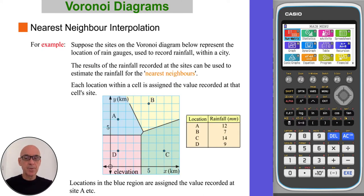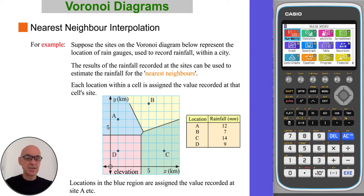For example, suppose the sites on the Voronoi diagram below represent the location of rain gauges used to record rainfall within a city. The results of the rainfall recorded at the sites can be used to estimate the rainfall for the nearest neighbours. Each location within a cell is assigned the value recorded at that cell's site. Locations in the blue region are assigned the value recorded at site A. Locations in the yellow region are assigned the value recorded at site B, and so on.